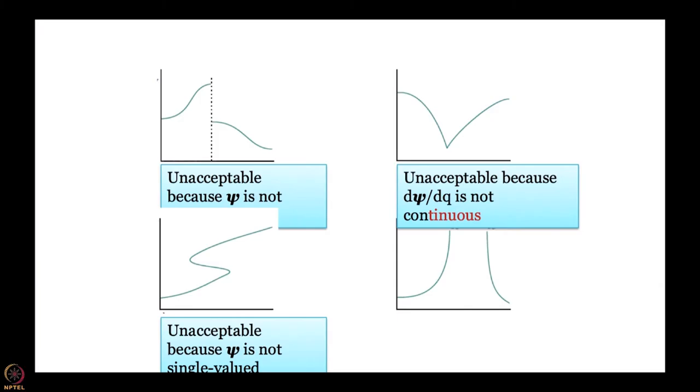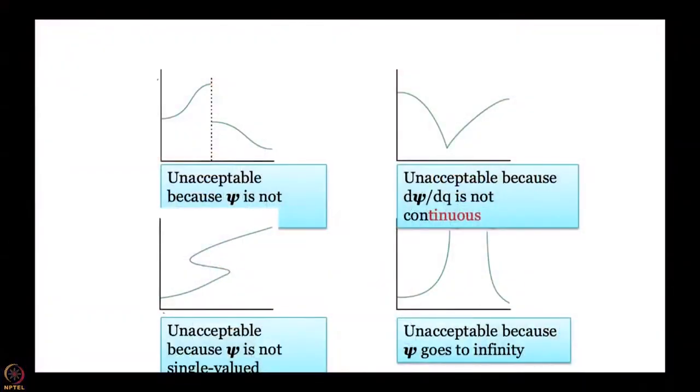Finally, a wave function that diverges to infinity at some point is not acceptable — as we said, if it becomes infinity you cannot integrate and get 1. So what we see is that, as a result of Born's interpretation, many restrictions start coming on the wave function. Many wave functions that may arise as solutions of the Schrödinger equation are not allowed because they fail to satisfy some requirement imposed by Born's interpretation that |ψ|² is probability density.